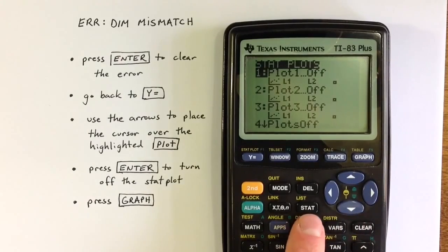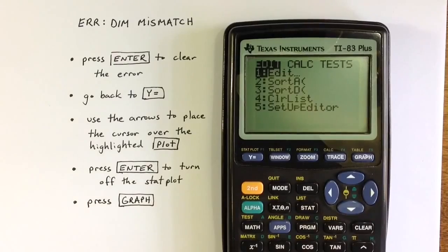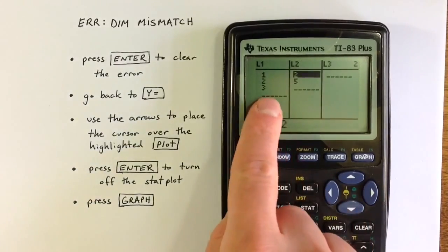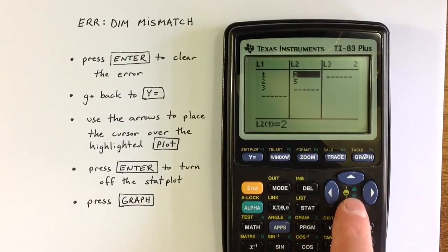And so we can see what happened here if we go to the stat menu and then choose the editor, the list editor. We can see that list 1 has 3 elements and list 2 has only 2 elements.